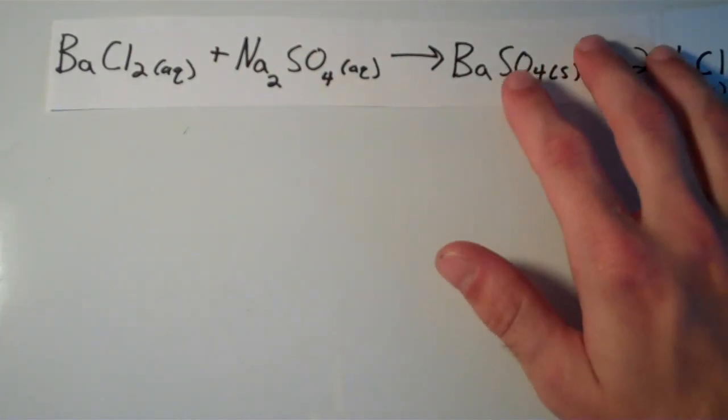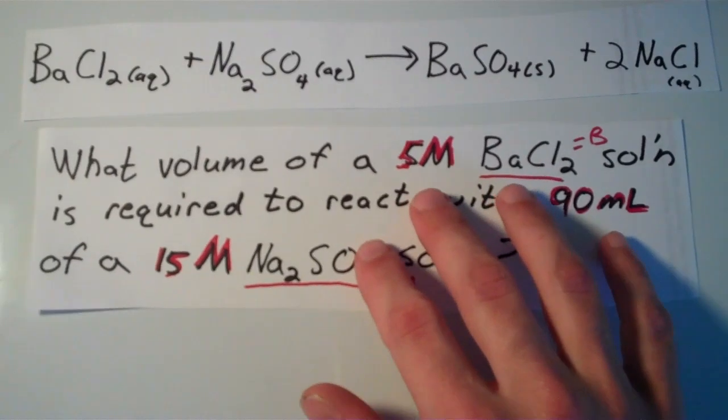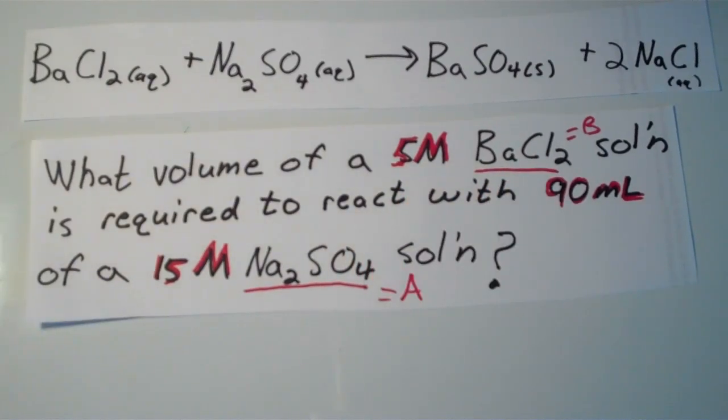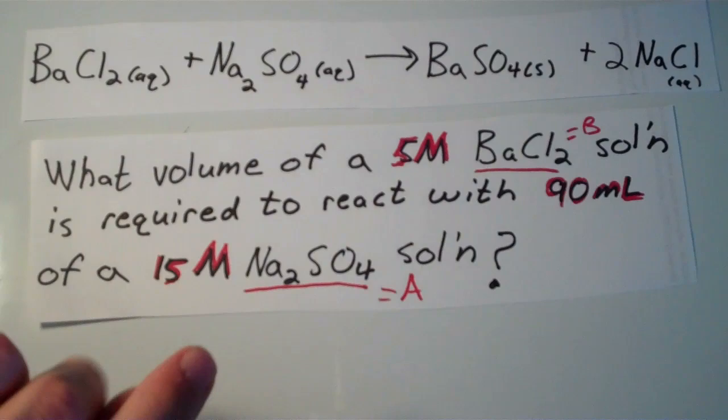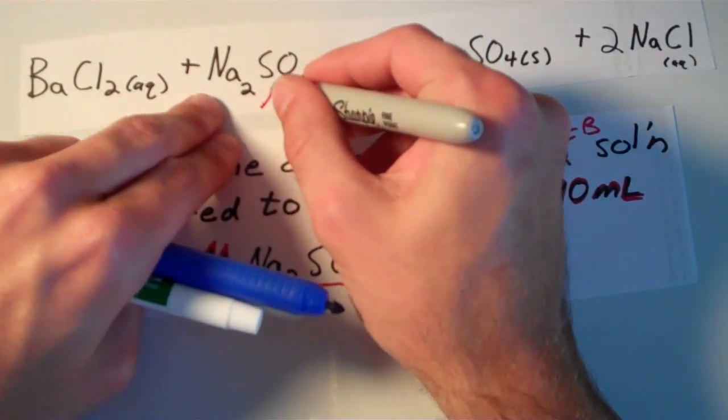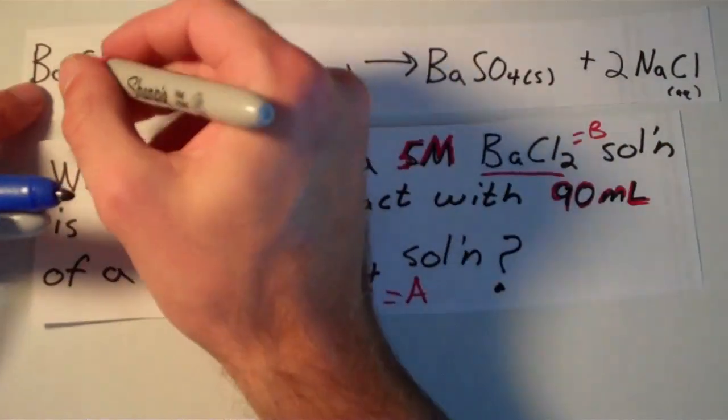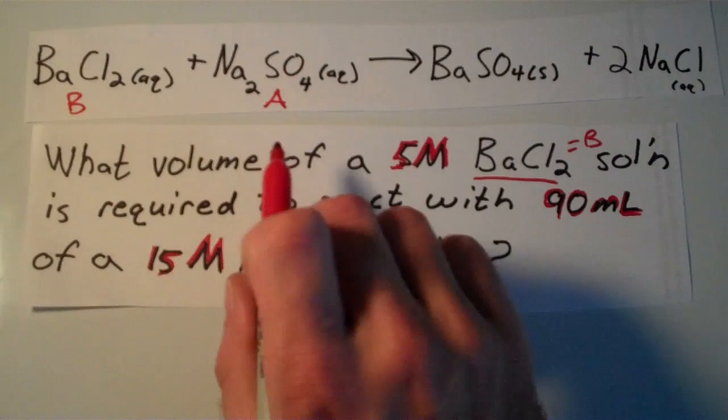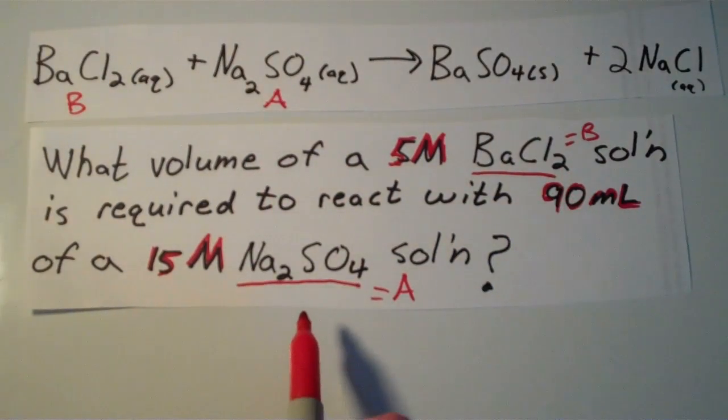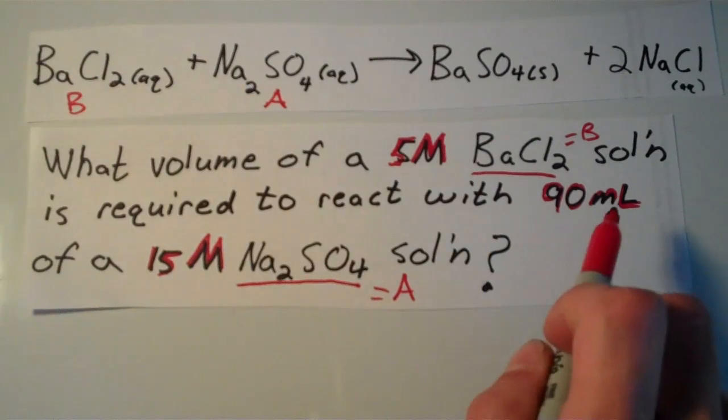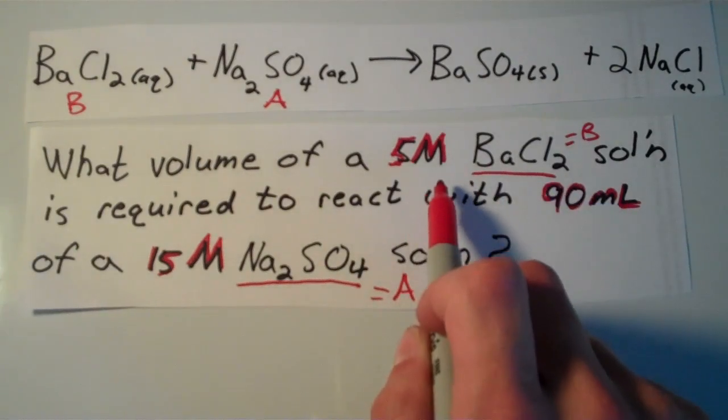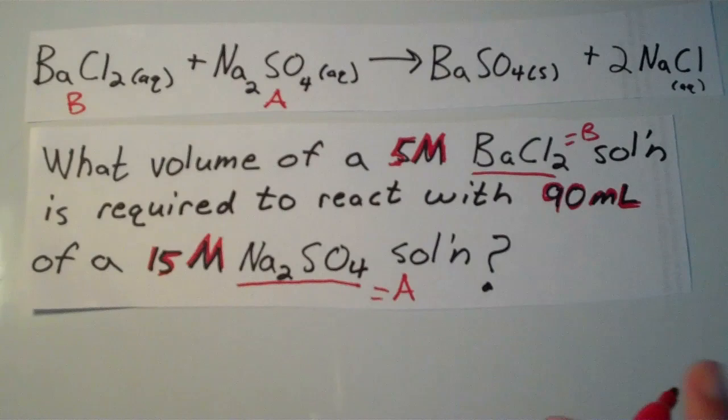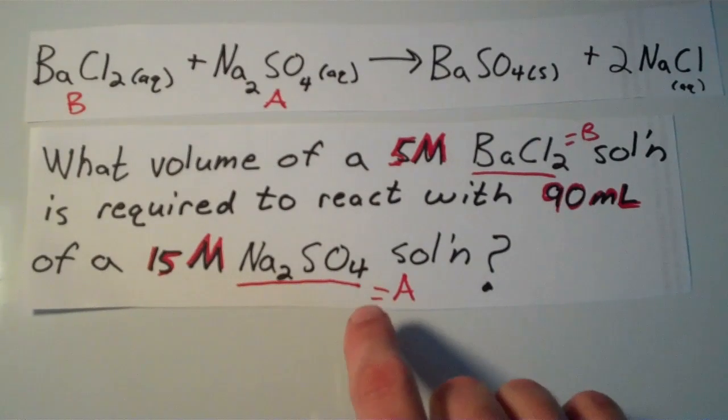So the problem says the following. What volume of a 5 molar BaCl2 solution is required to react with 90 milliliters of a 15 molar Na2SO4 solution? So to make this simple, and so that I have enough room to do all these calculations, I'm going to call Na2SO4, that's going to be my A. I'm just going to call that A. And my BaCl2, I'm going to call that B. So this is just to save room. The reason why I've chosen Na2SO4 as A is because Na2SO4 is the compound that we know most about. We know the volume, and we know the concentration, but for BaCl2, we only know the concentration, and the volume is our unknown. That's what we're trying to figure out. So when I start my calculations, I'm going to start with Na2SO4, and that's why I've called it A.